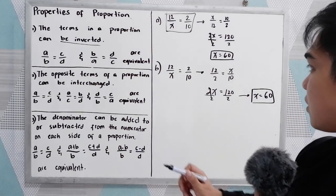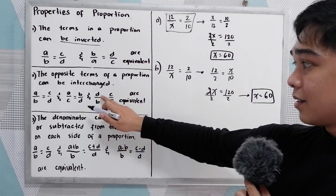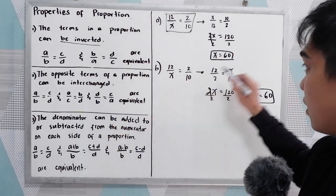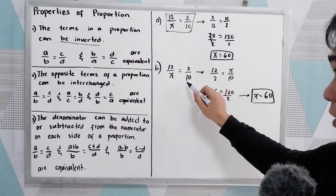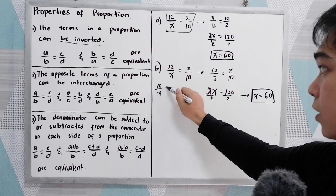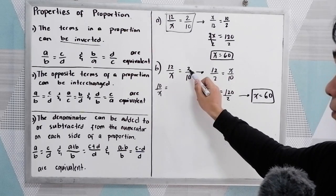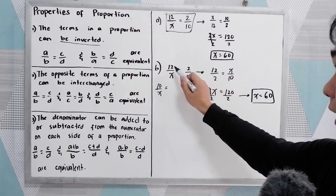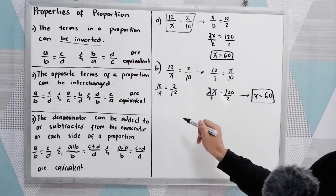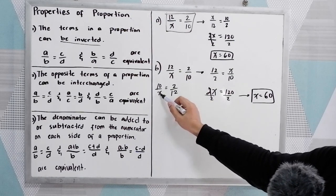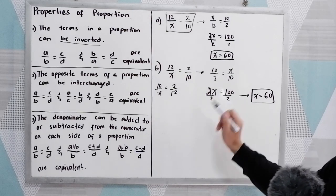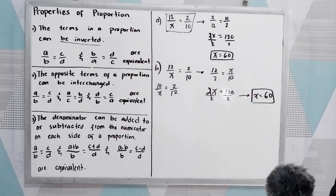In the same case, using D over B: 10 over X equals C over A, which is 2 over 12. So X times 2 equals 2X, which is equal to 10 times 12, that is 120.